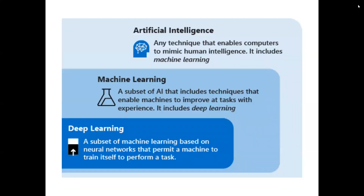AI is a technique that enables computers to mimic human intelligence. It includes machine learning — a subset of AI that enables machines to improve a task with experience. It also includes deep learning, a subset of machine learning based on neural networks that permit a machine to train itself to perform a task.